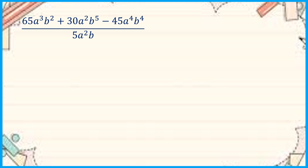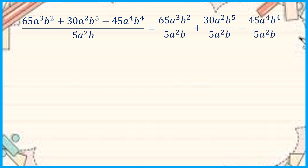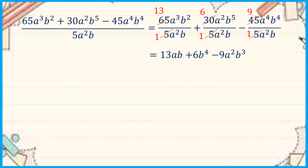Let us have another one. We separate each of the monomials and then simplify. We can cancel 65 and 5: 65 becomes 13 and 5 becomes 1. Then 30 over 5 becomes 6, and 45 over 5 becomes 9. And then we subtract the indices. So we have 13ab plus 6b to the fourth minus 9a squared b to the third.